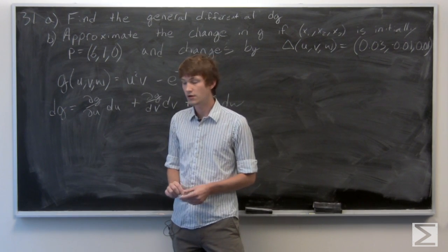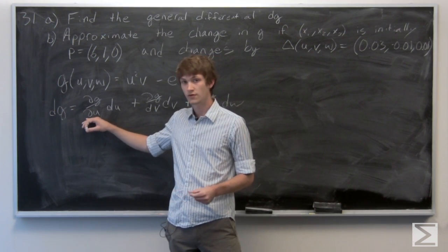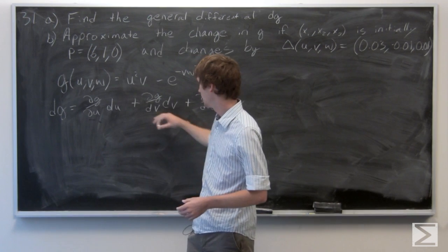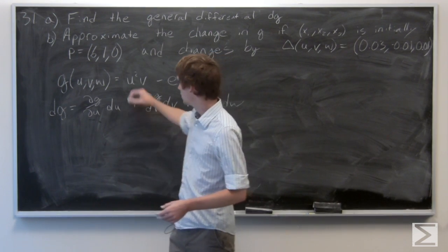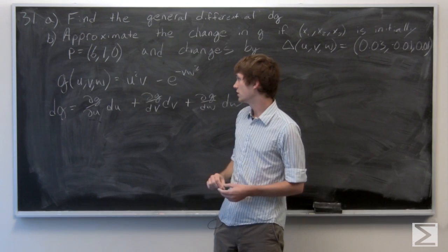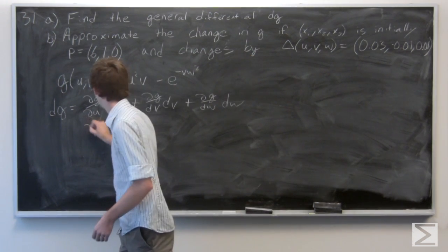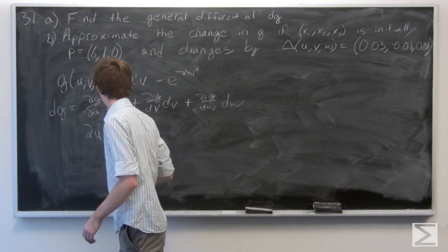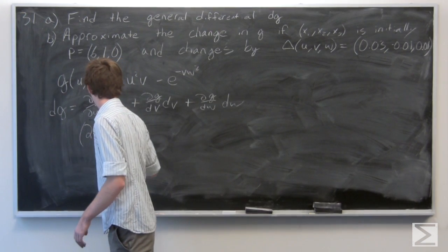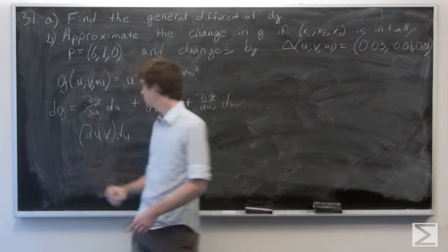So first we're going to find the partial derivative of g with respect to u, and then v, and then w. So the partial derivative of g with respect to u is just 2uv.